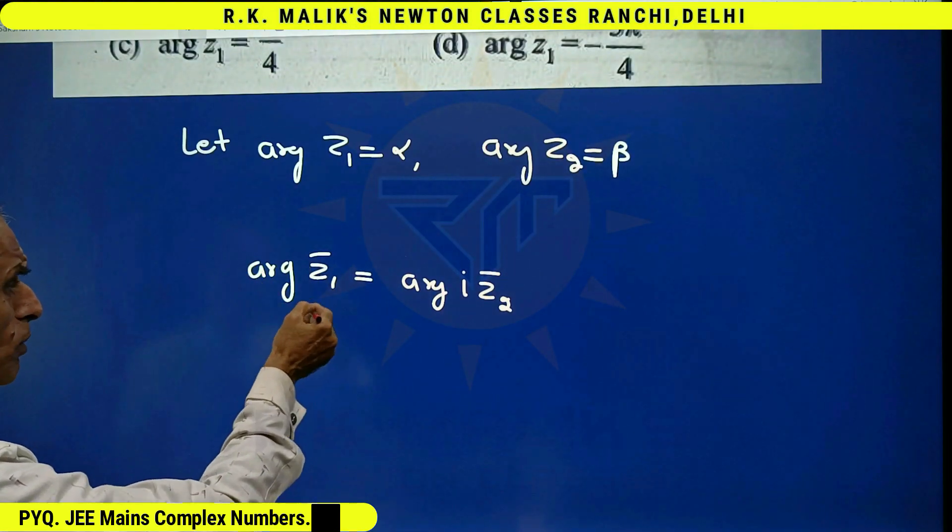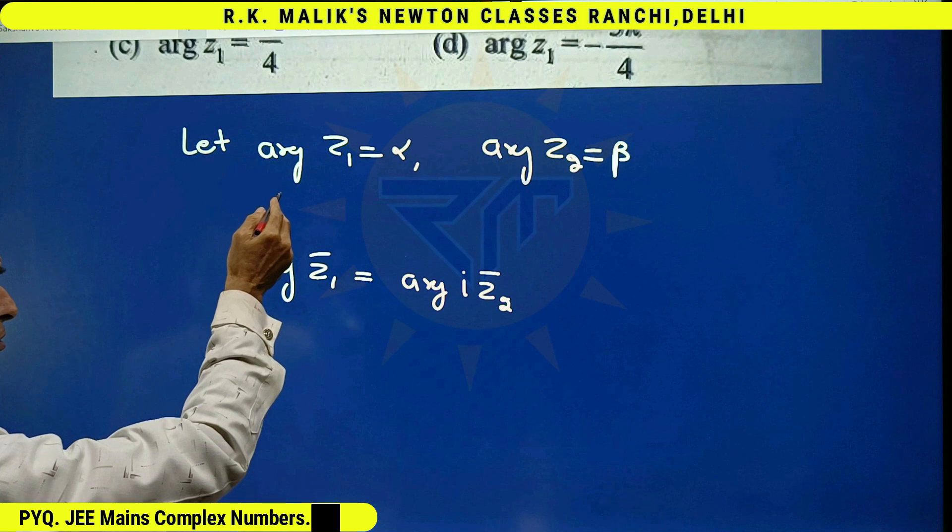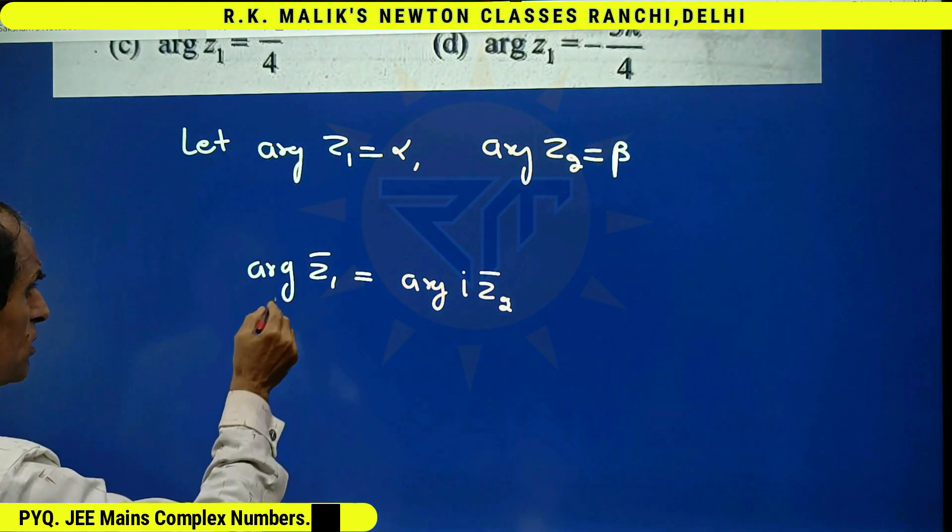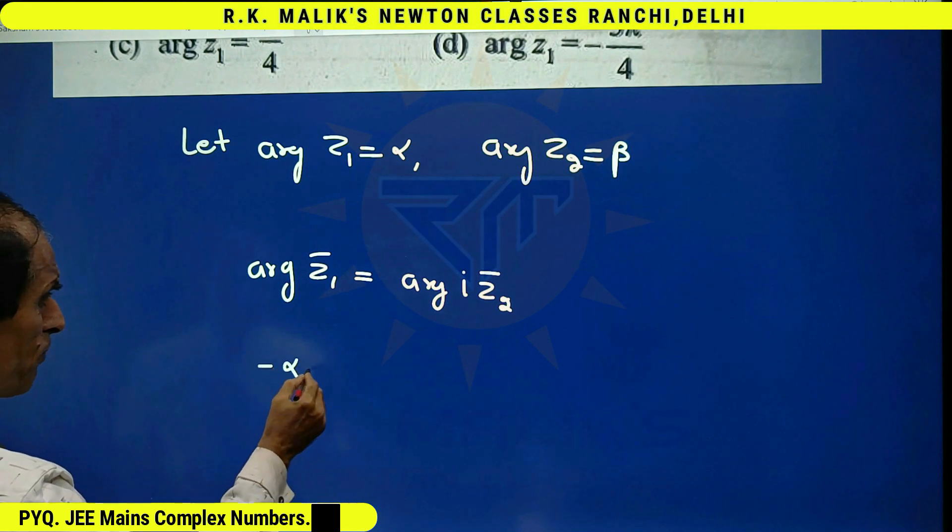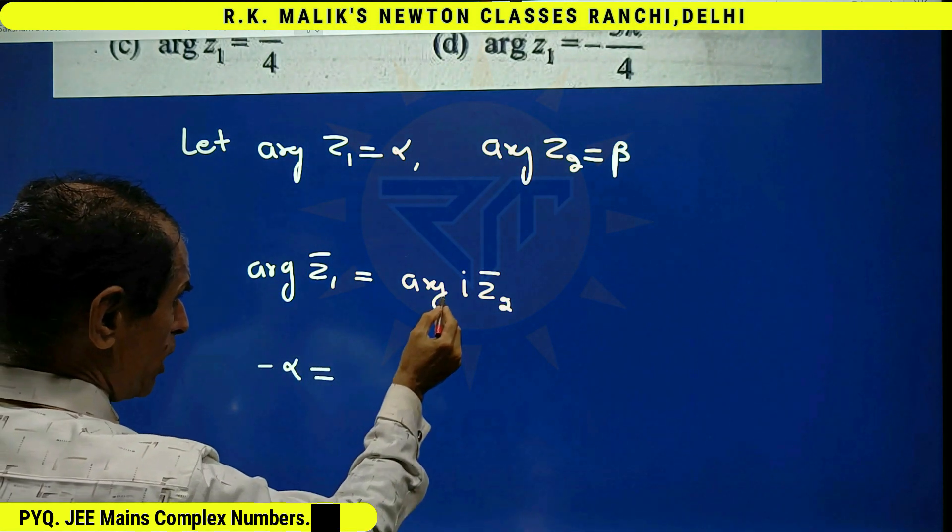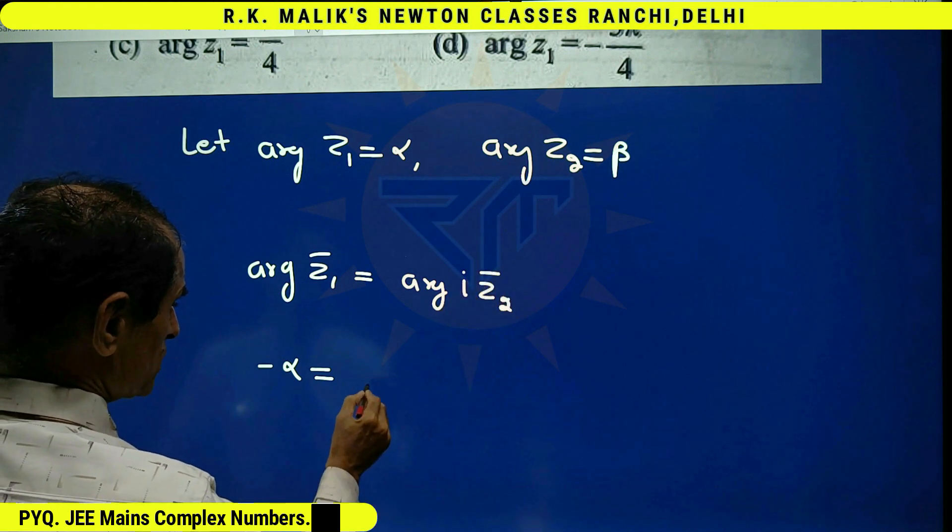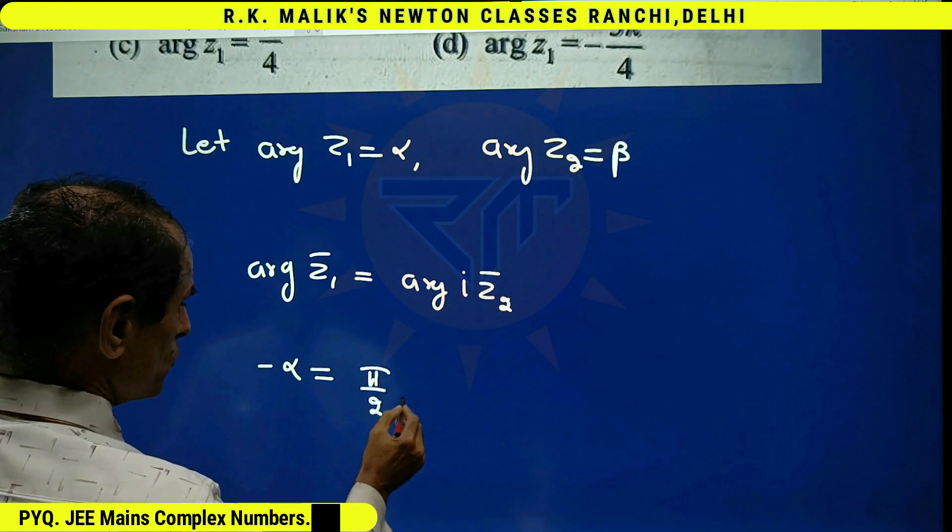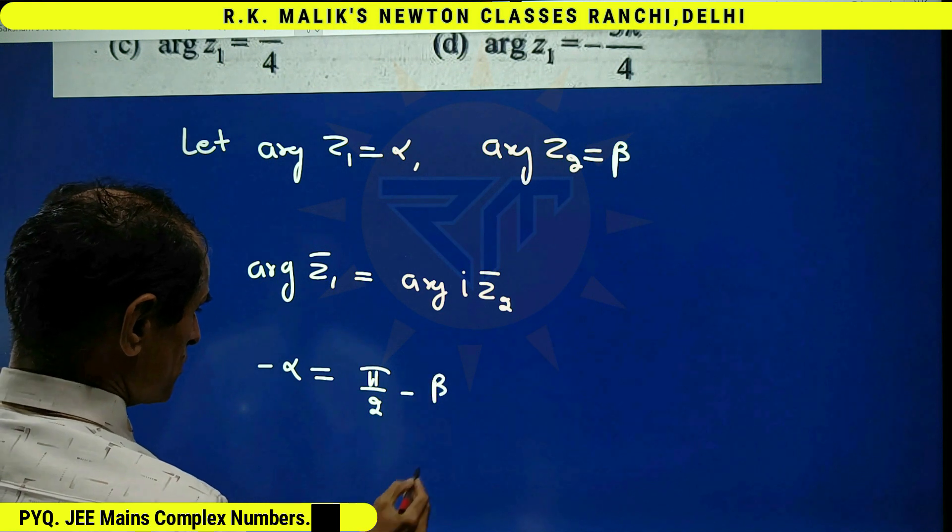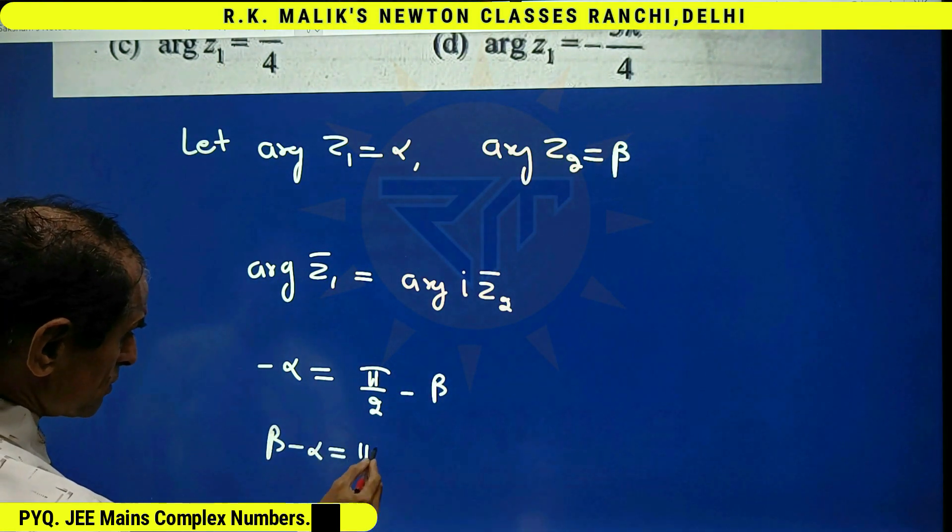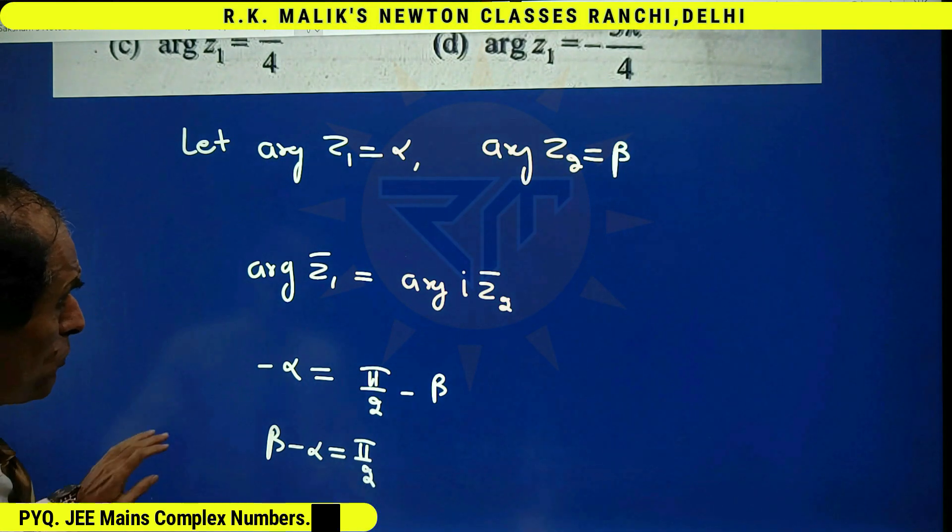And we know that argument of z1 bar is minus of argument of z1. Therefore, this becomes minus alpha equal to argument of i plus argument of z2 bar. That is pi by 2 minus beta. That is beta minus alpha is pi by 2.